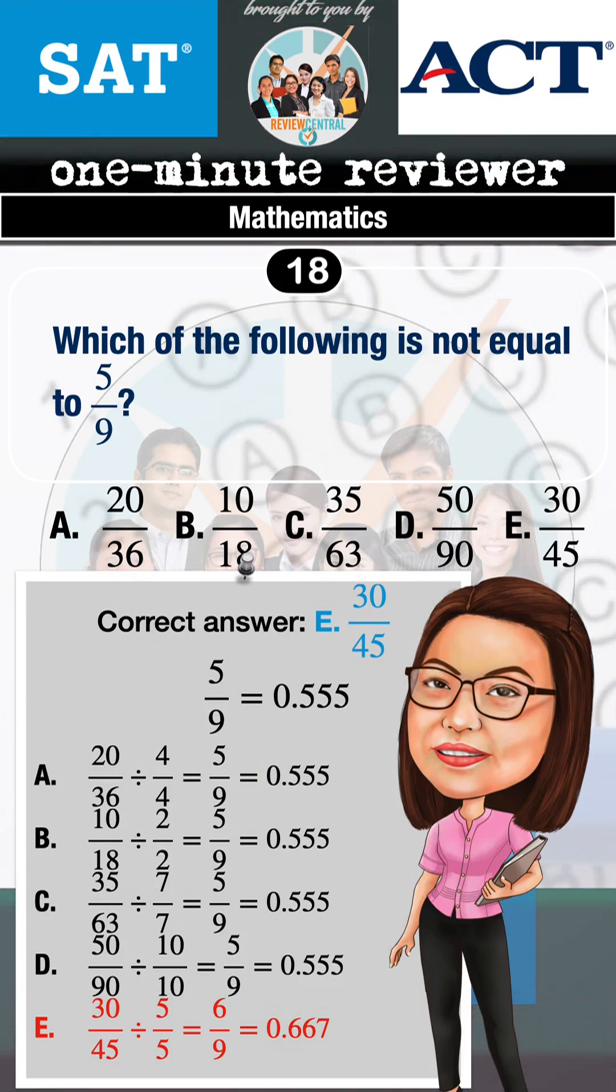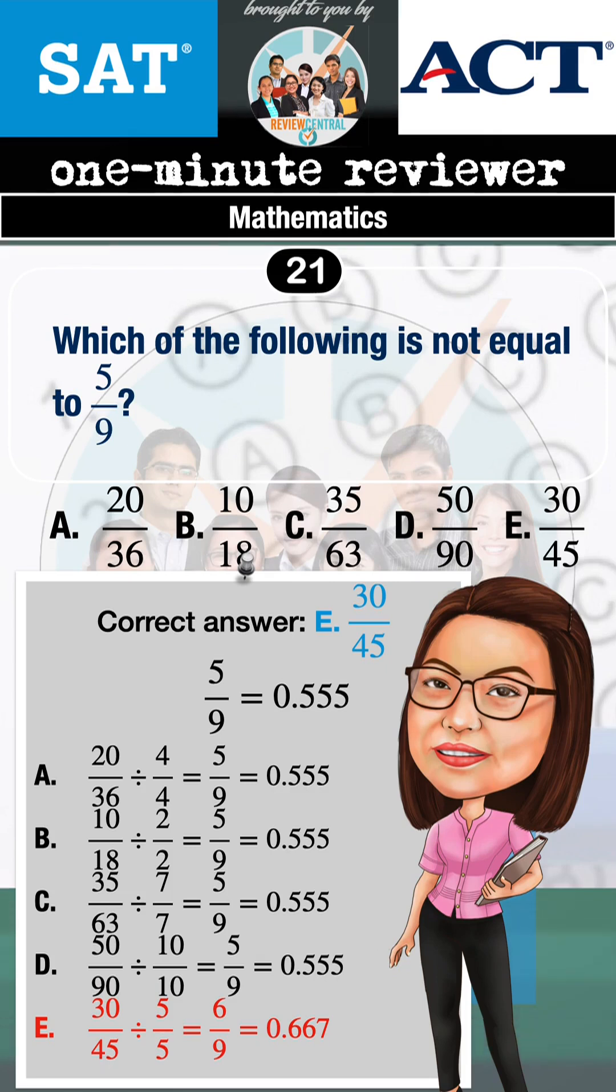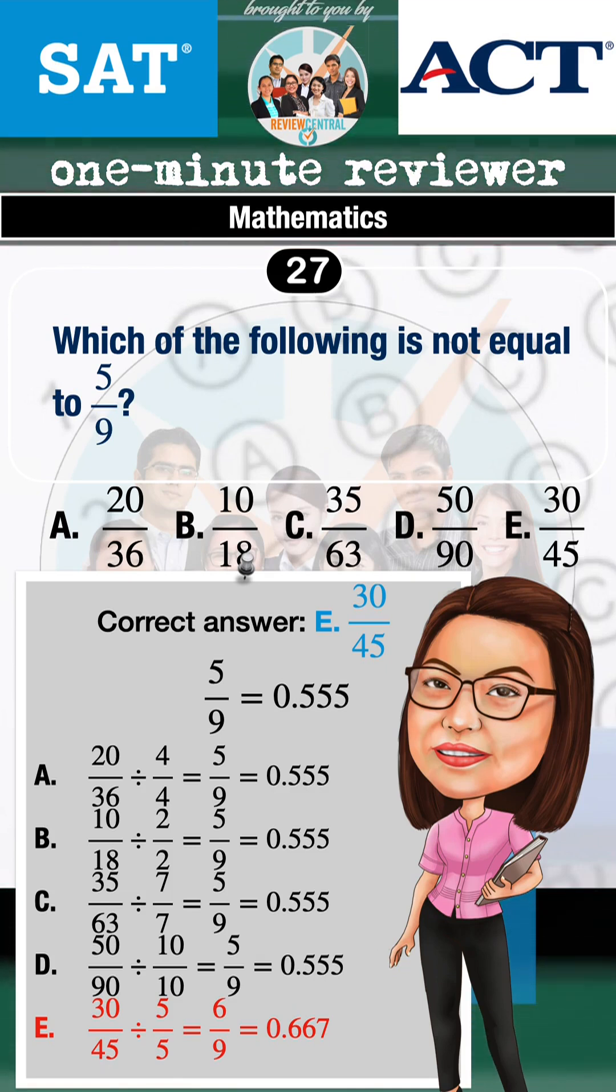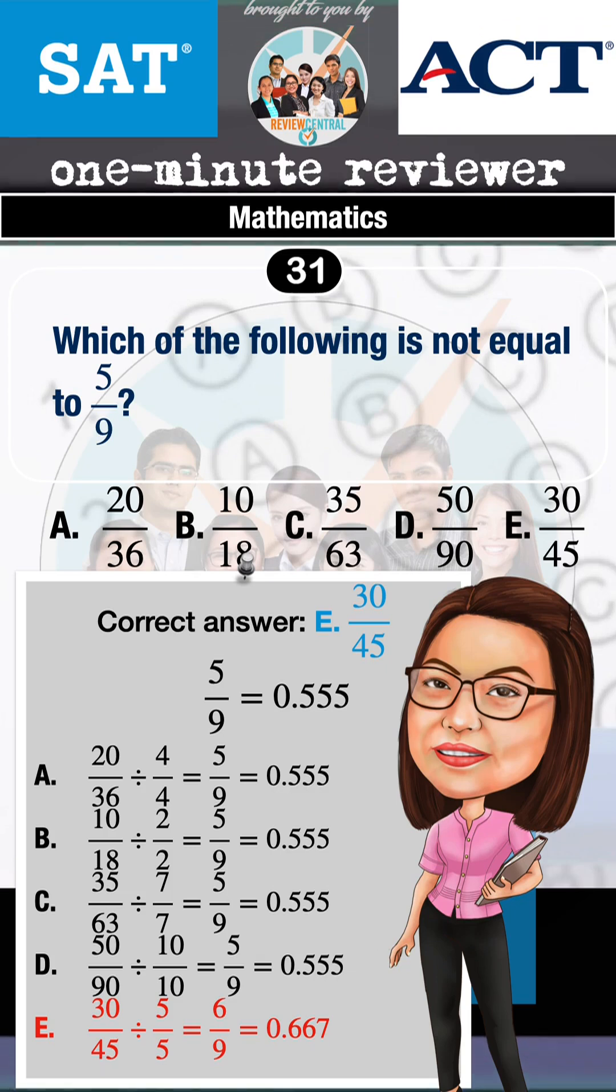If you're taking the SAT math test where calculator is allowed, the fastest solution is to use your calculator. 5/9 equals 0.555, and all the answer choices will result in 0.555 except for answer choice E, 30/45, which will result in 0.667. You should also be able to quickly answer this even without using the calculator.